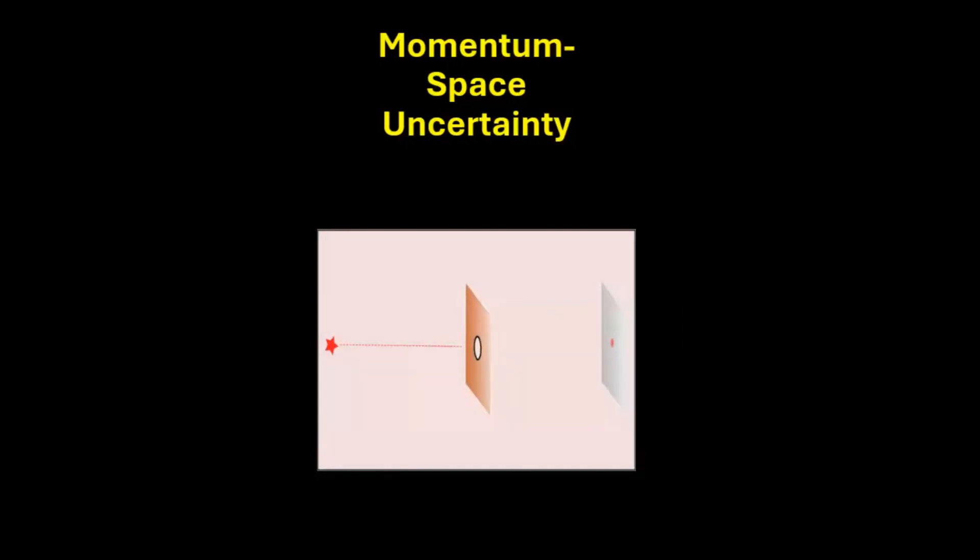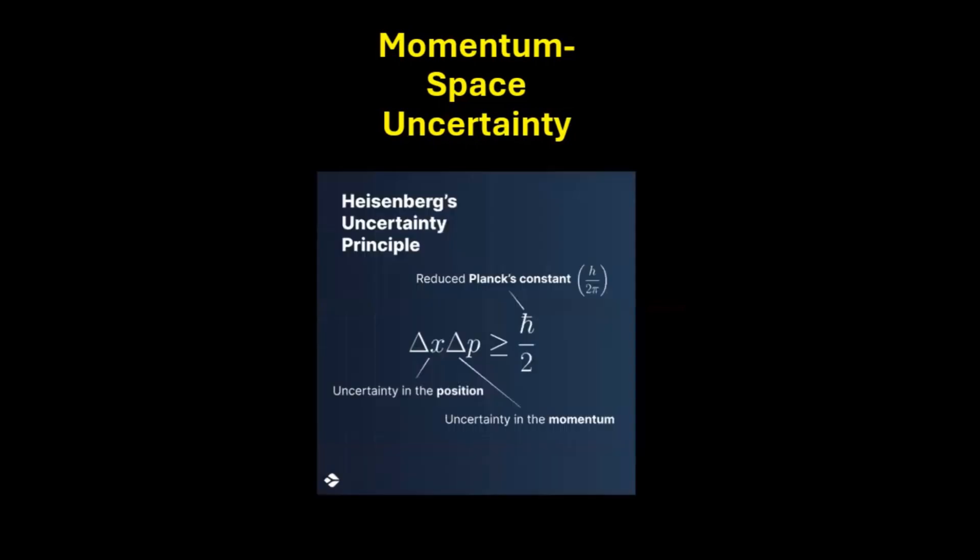Heisenberg figured out that the more we know about a particle's position, the less we know how fast it is going. This is mathematically given by the equation: delta x times delta p is greater than or equal to h-bar over 2.